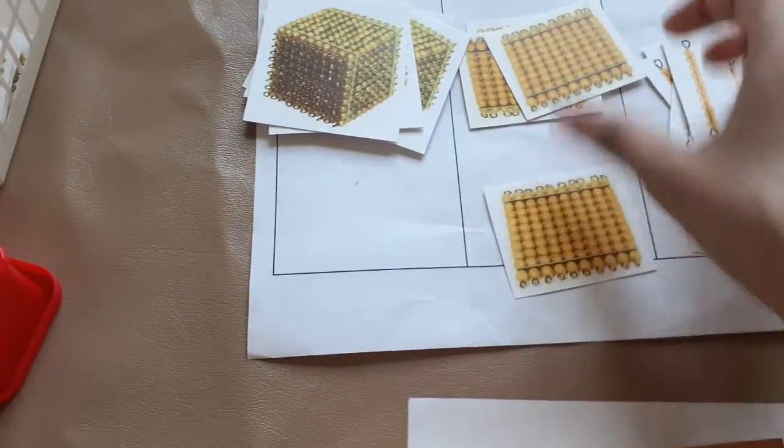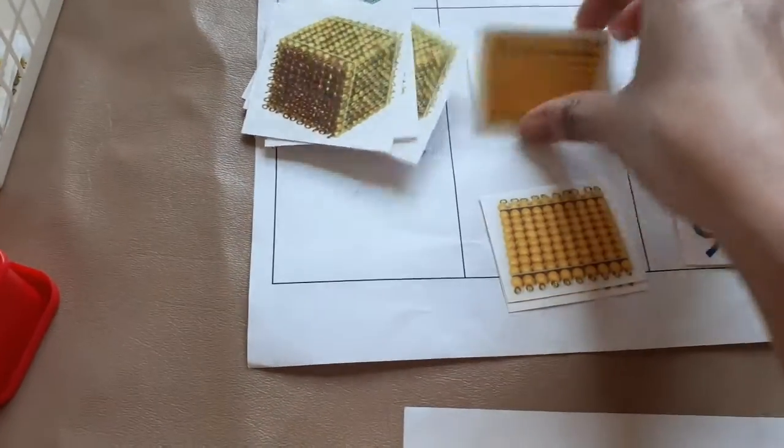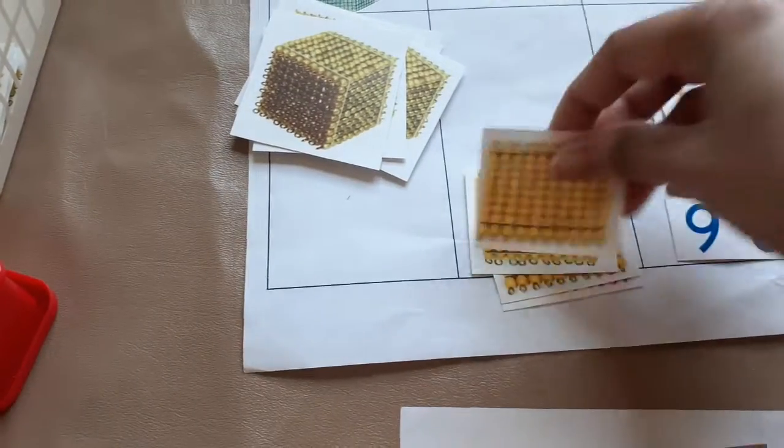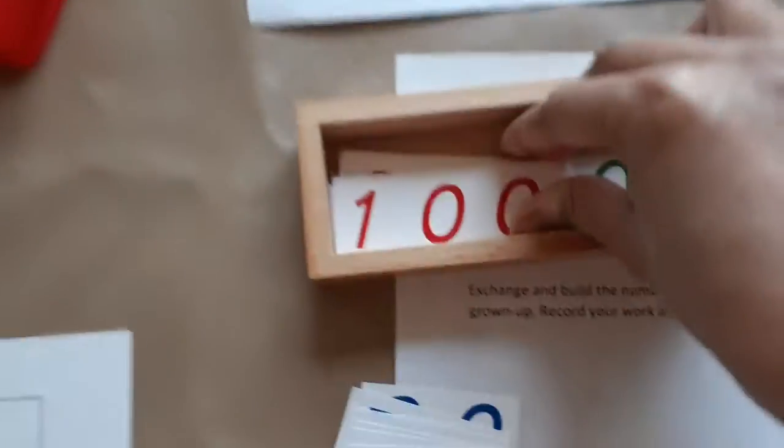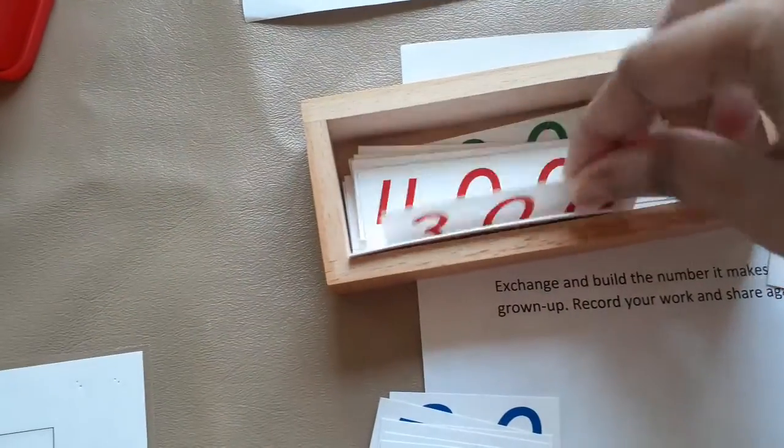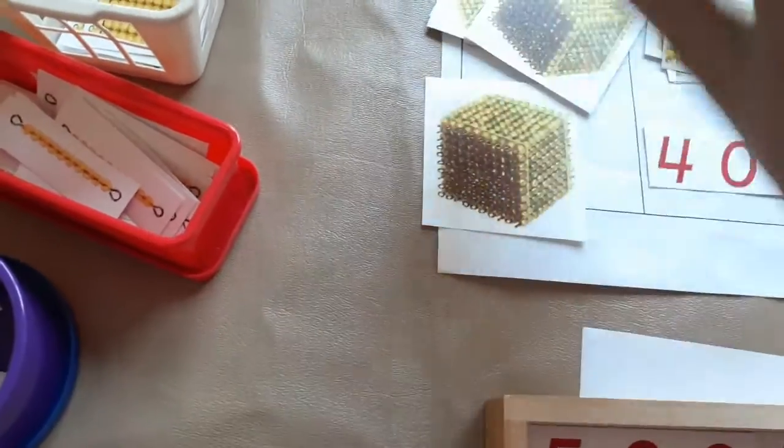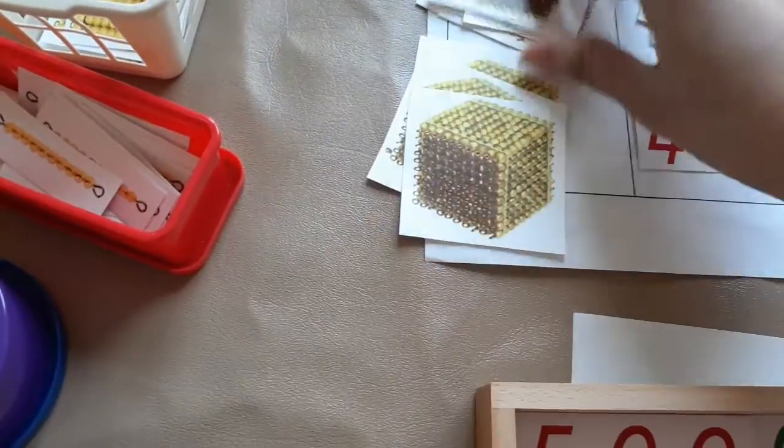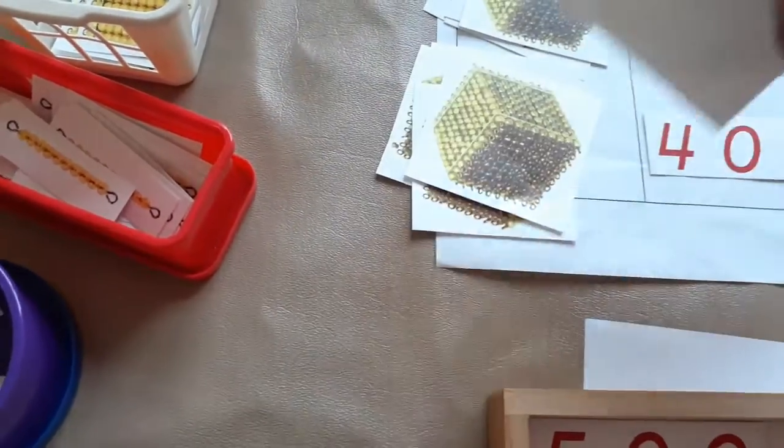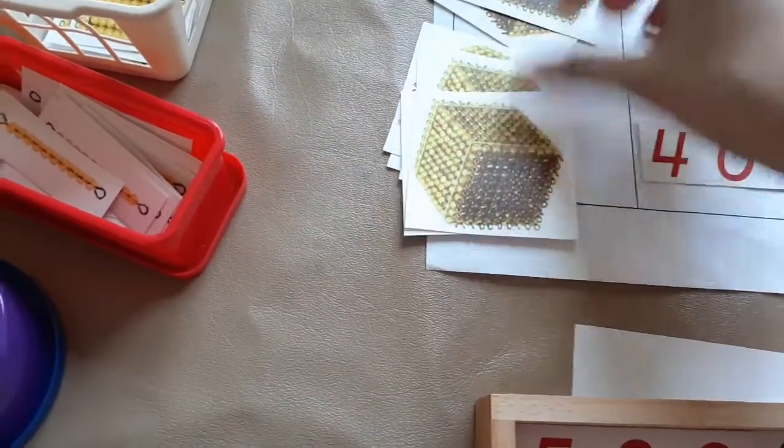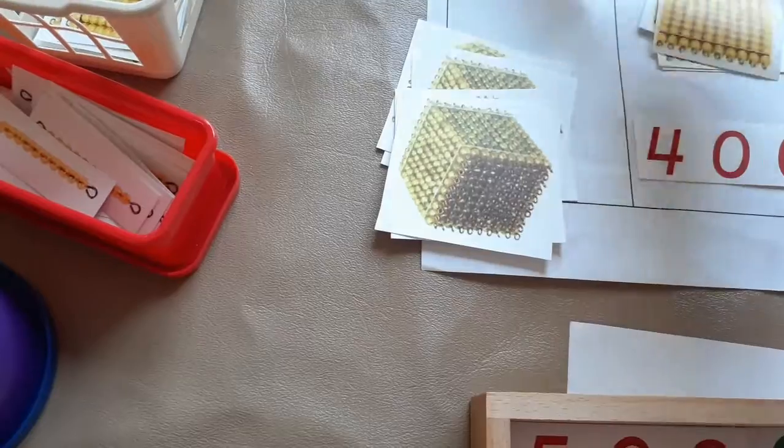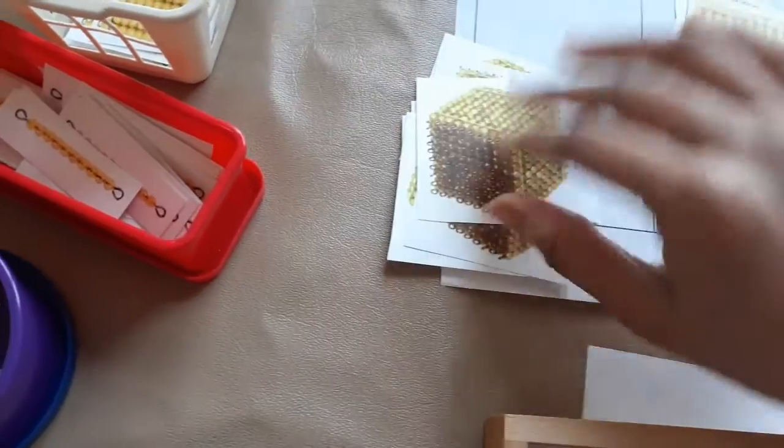I have 100, 200, 300, and 400. And I have 1,000, 2,000, 3,000, 4,000, 5,000, 6,000, 7,000, 8,000, and 9,000.